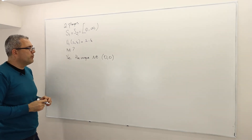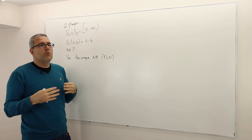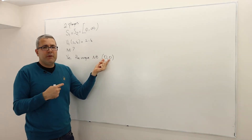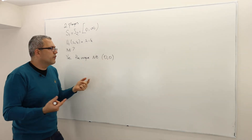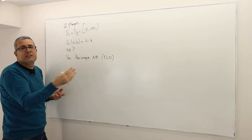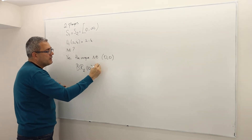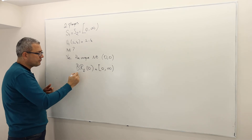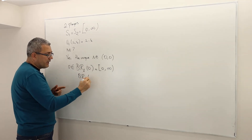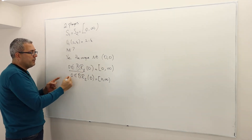Why is this a Nash equilibrium? Look — let's say I'm player one and I learn that my opponent selected zero. Would I regret from my choice? No, because my opponent has selected zero, I'm going to get zero payoff whatever number I pick. So I will never say I should have selected 10,000 or 1 million — the numbers will be multiplied and I'm going to get zero anyway. That means the best response for player one when his opponent is playing zero is any number in the interval [0, ∞), and zero is in this set. Similarly, the second player's best response is also the interval [0, ∞), and zero is in this set. So zero-zero is a Nash equilibrium.